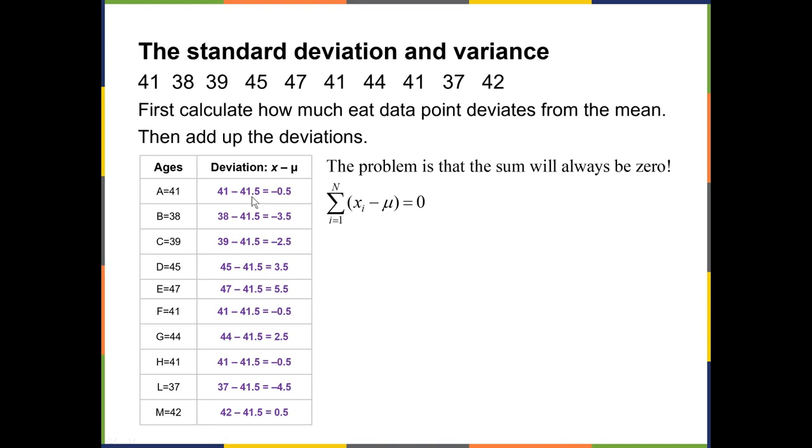For example, if the average age is 41.5, 41 is a half year smaller than it, right? 38 is three and a half years less than it. 47 is five and a half years over it, etc. So what we did is we calculated the deviation from the mean for each of the data points.